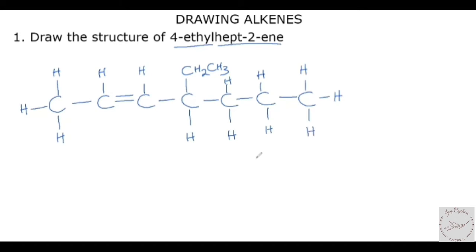With this, we have the structure of 4-ethyl-hept-2-ene. Hept-2-ene tells us that the double bond is at the second carbon, which is this. And 4-ethyl tells us that the ethyl group is on the fourth carbon. If you are counting from the right-hand side, then your double bond would be at this end, and this is also the fourth carbon if you are counting from here.